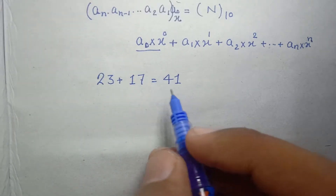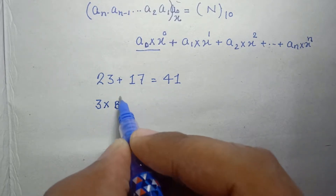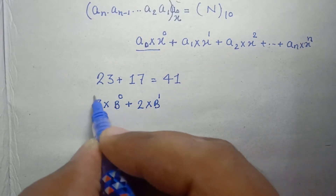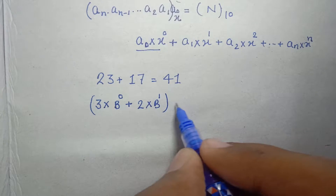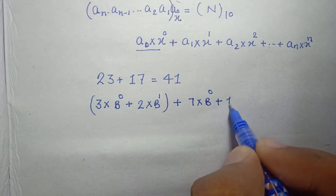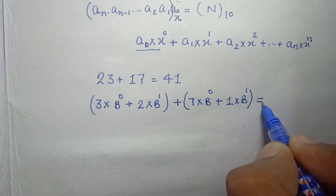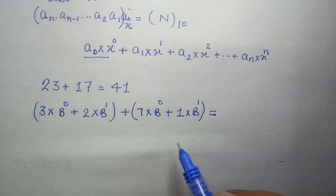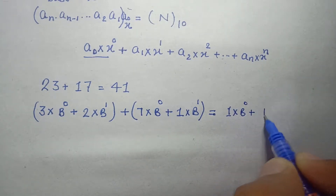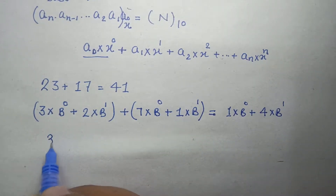We apply the same concept here. Expanding 23 in base b: 3 into b to the power 0 plus 2 into b to the power 1. Expanding 17: 7 into b to the power 0 plus 1 into b to the power 1. Equating to the expansion of 41: 1 into b to the power 0 plus 4 into b to the power 1.